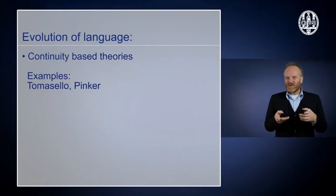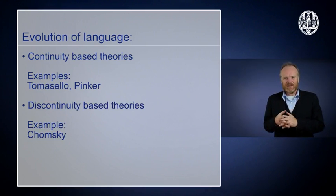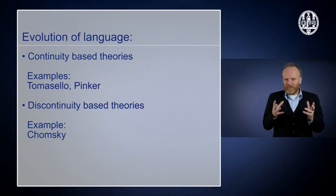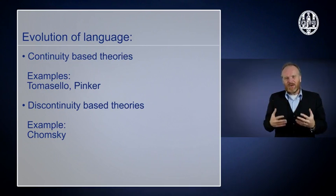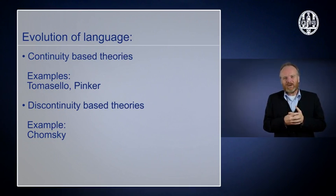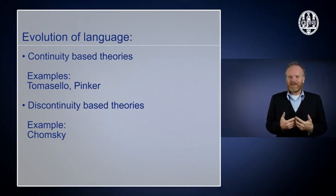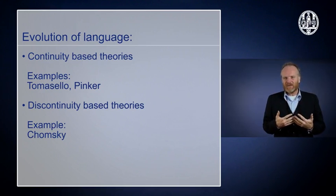There are theories about it. The main division is between continuity-based theories and discontinuity-based theories. Continuity-based theories say that language is based on animal communication. It's just a somewhat more complicated form of them. Discontinuity theories say that human language is really something different. Something must have happened in our development to make human language possible.